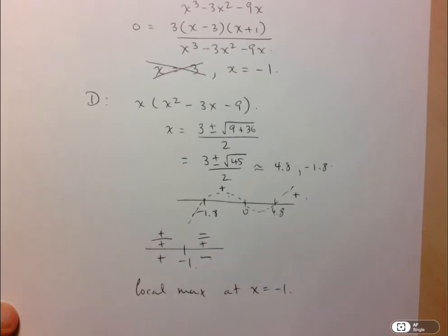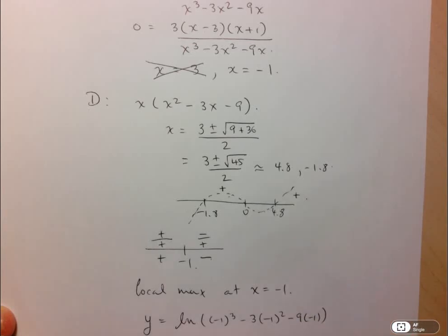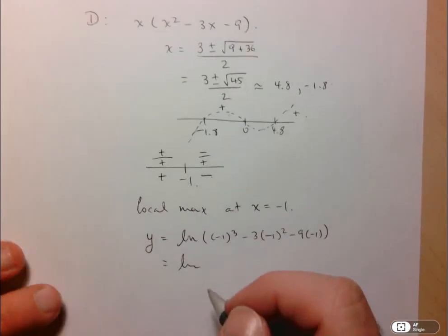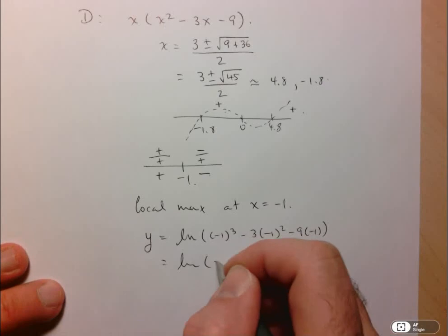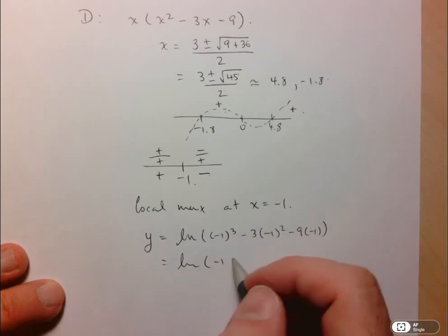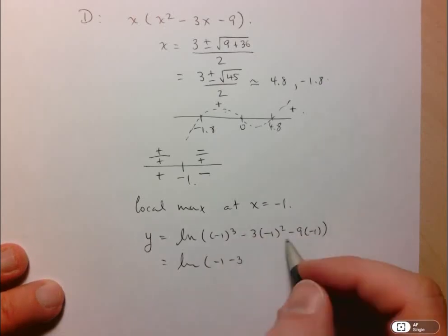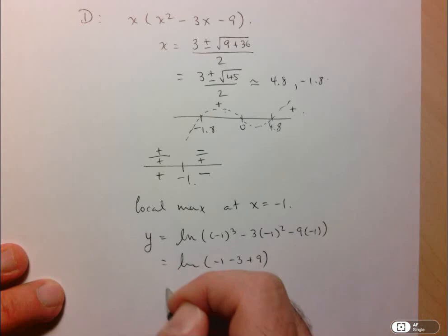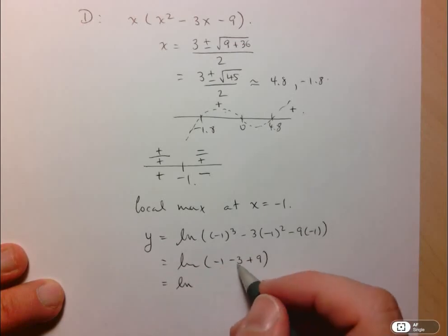And since they want the actual point, let's stick this into the function to determine the y value. So ln of negative 1 cubed minus 3 times negative 1 squared minus 9 times negative 1. So what do we have here? Negative 1. This is going to be minus 3. And this is going to be plus 9. So in the end, we have ln of negative 1, which is negative 4 plus 9 is 5.